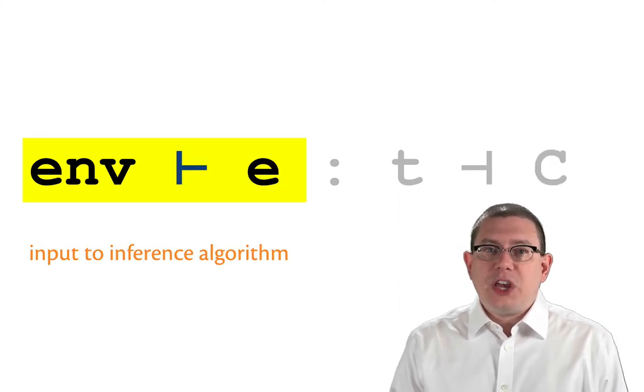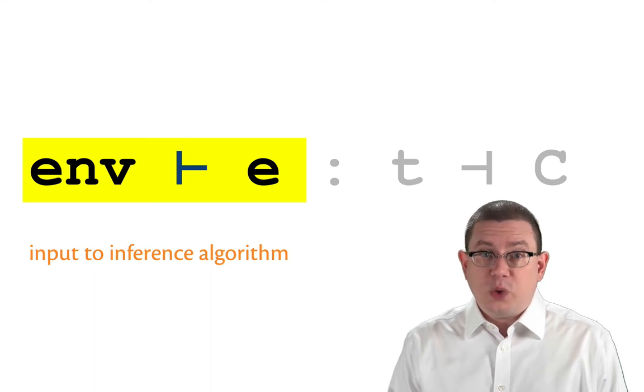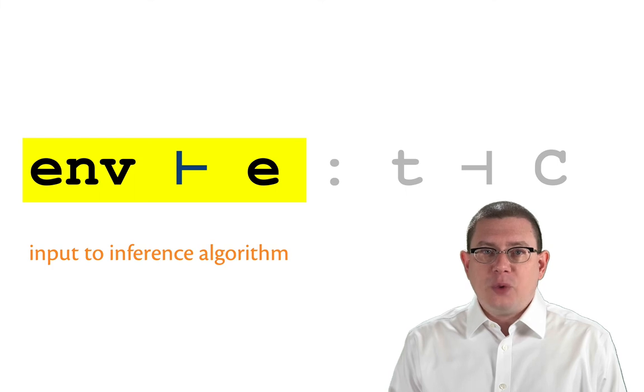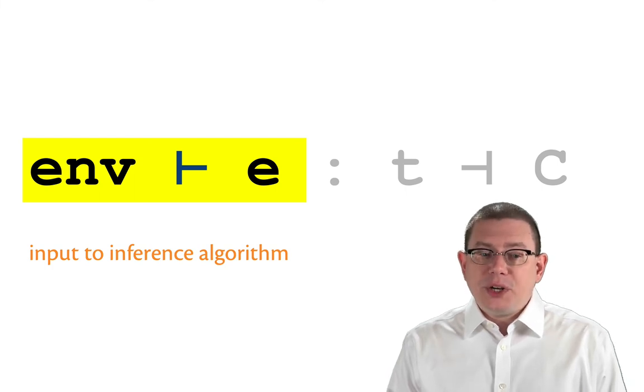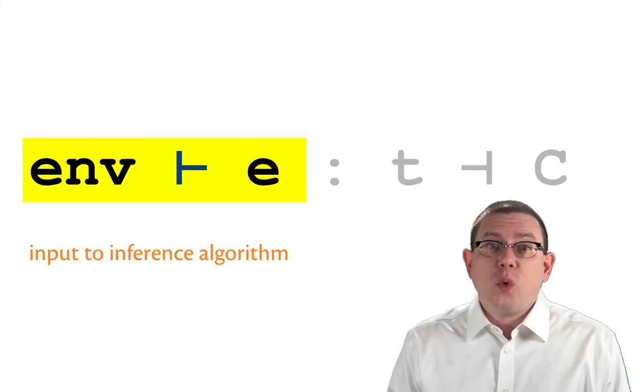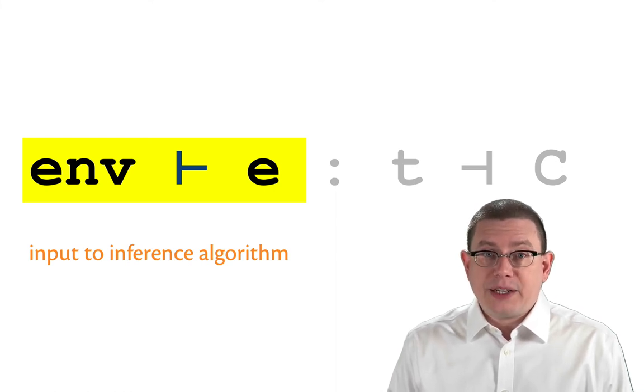If you think about this relation as an algorithm, which we will do, it's an algorithm that takes input and gives you output. The input it takes is a static environment and an expression. You want to infer the type of that expression E in the static environment, env.